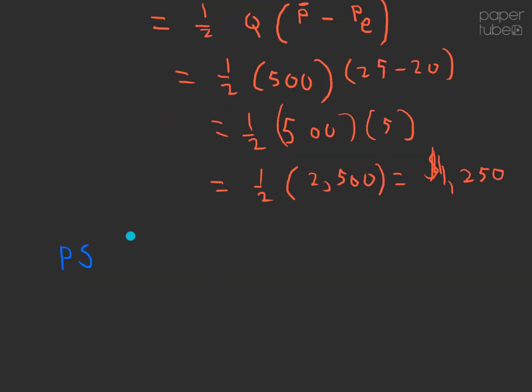Next, we need to calculate the producer surplus. It's done the exact same way, only we're finding a different area on the diagram. The formula is exactly the same—it's one half of the base times the height.